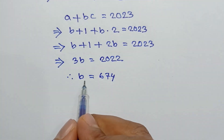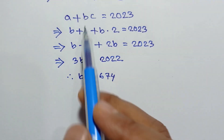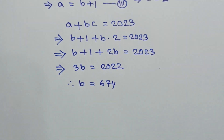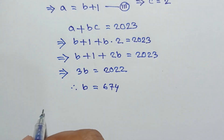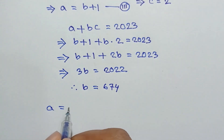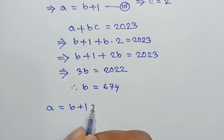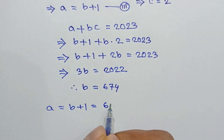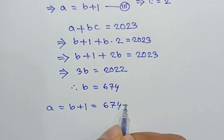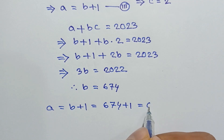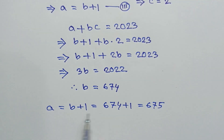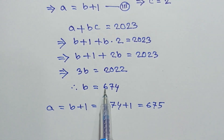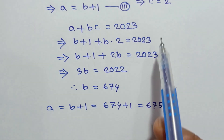Putting this value of b into equation number three, we get a equals b plus one equals 674 plus one equals 675. So the value of a is 675, the value of b is 674, and c is equal to 2.